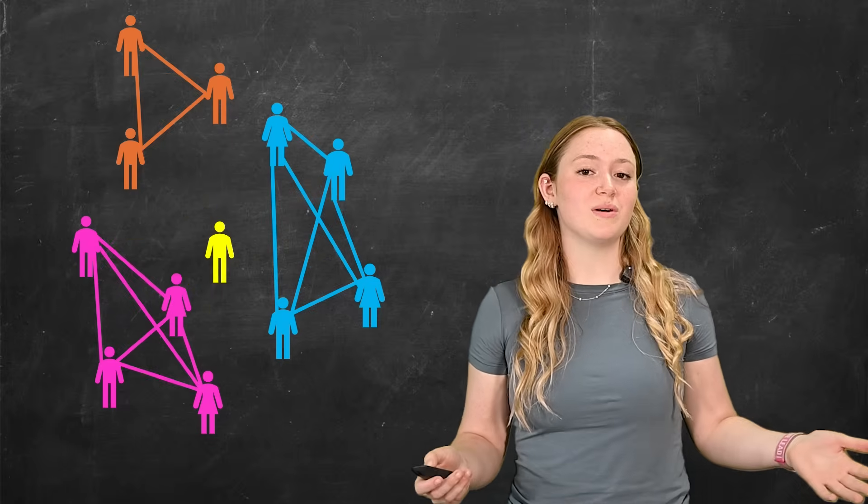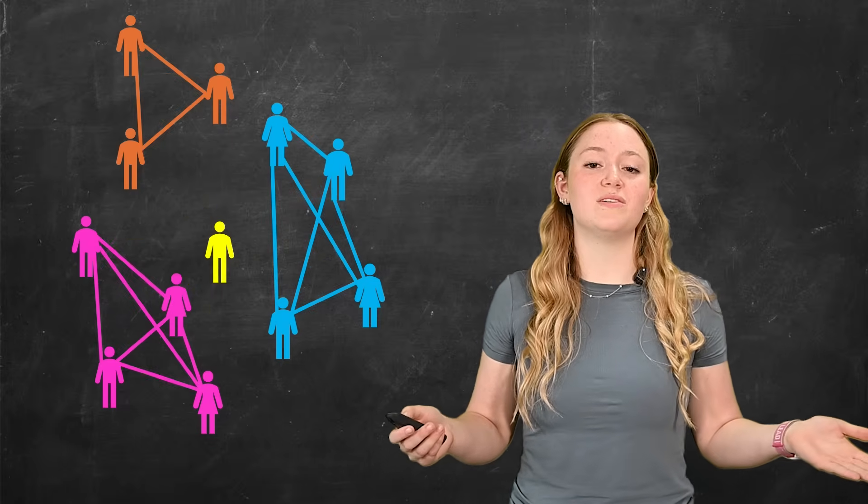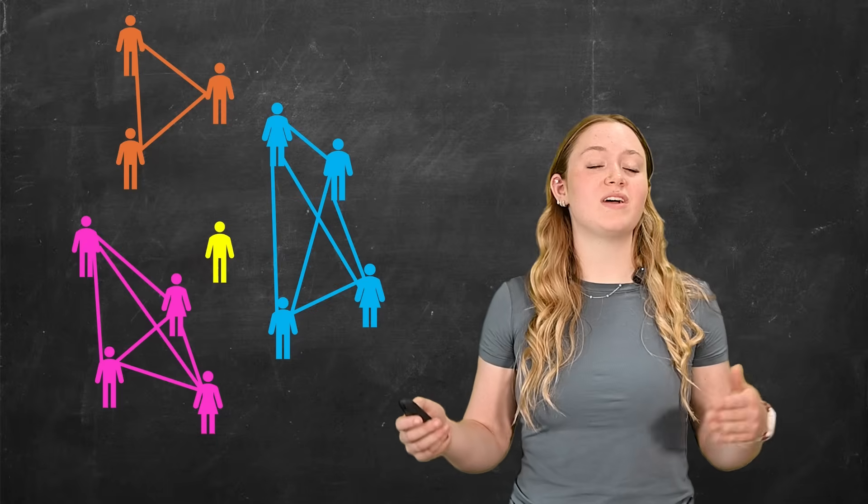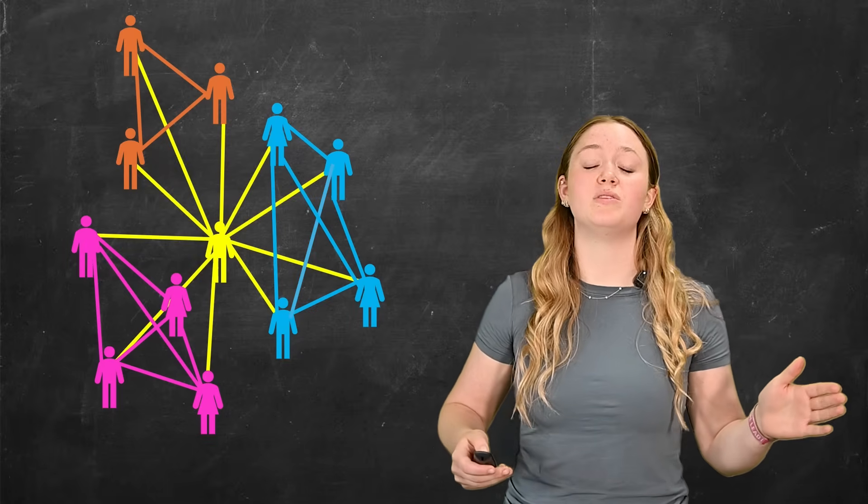So in the real world, we would call this a clique. In math, we do too. Except in math, it means that for every two people, there is guaranteed to be a connection between them.